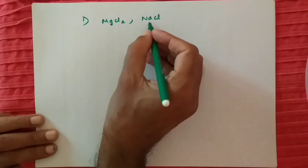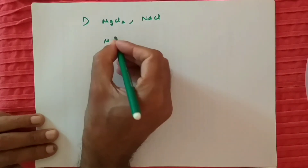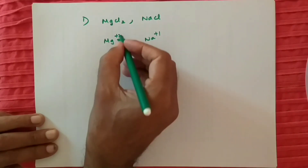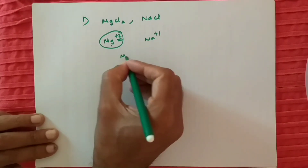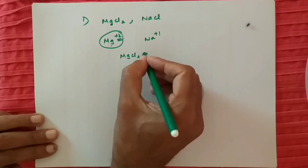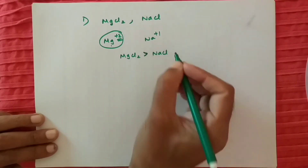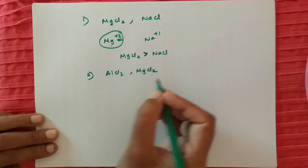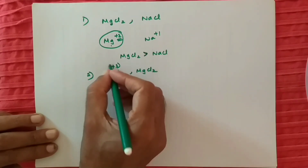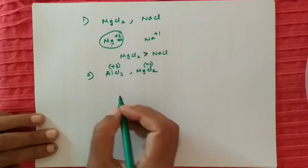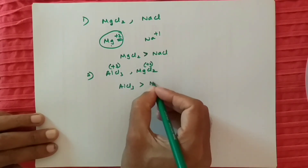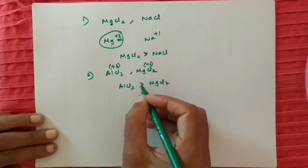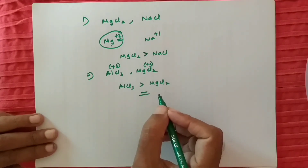One more example: MgCl2 vs NaCl. In magnesium the charge is +2, whereas in sodium it is +1. Clearly magnesium has more charge, so MgCl2 will have more lattice energy than NaCl. Similarly, comparing AlCl3 and MgCl2: Al has a charge of +3 and Mg is +2. So AlCl3 will have more lattice energy than MgCl2. First go with charge — greater charge means greater lattice energy. When charges are equal, go for the size.